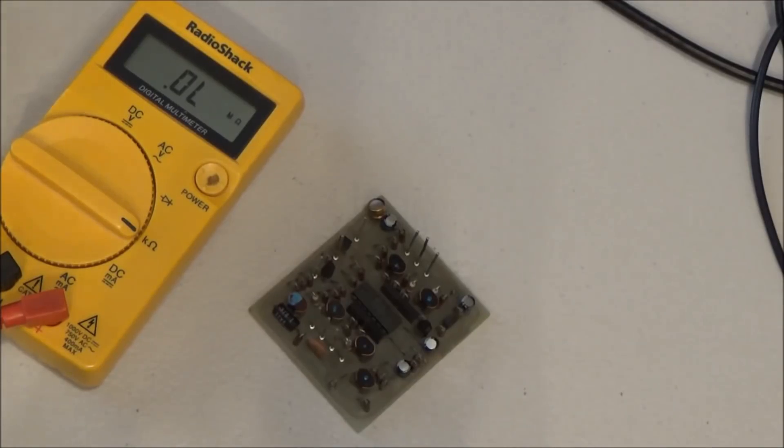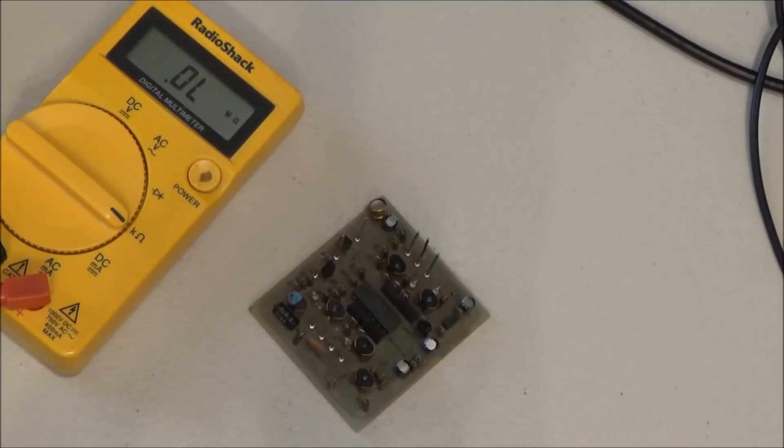So our problem has to be with one or both of these transistors here which comprise the exponential converter. And we could probe them with the oscilloscope to figure out which one is the bad one, but it really doesn't matter. They're coupled together with this little copper band for thermal purposes. So to remove the bad one, we need to remove the other one as well. So it would just be quicker to test them when we have them out.